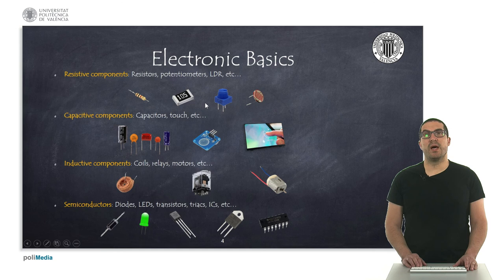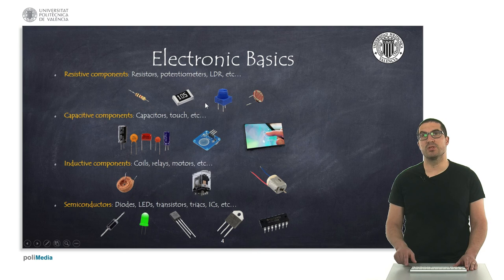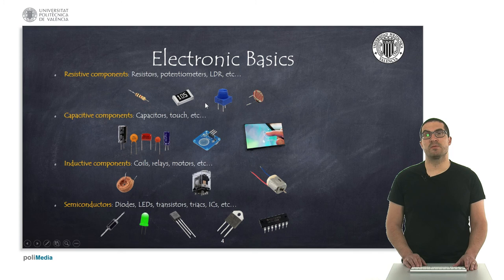In electronics we have different kinds of components. We have resistive components — basically resistors, potentiometers, and light-dependent resistors. We also have capacitive components like capacitors or touch devices. We have inductive components like coils, relays, and motors. And a very special kind of components called semiconductors, like diodes, LEDs, transistors, triacs, integrated circuits, and so on.